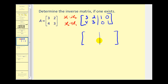Carrying out the operations: for row 1, 3 times 3 minus 2 times 4 is 9 minus 8, that's 1. Then 3 times 2 minus 2 times 3 is 6 minus 6, that's 0. Then 3 times 1 minus 2 times 0 is 3, and 3 times 0 minus 2 times 1 is negative 2. For row 2, 3 times 4 minus 4 times 3 is 0. Then 3 times 3 minus 4 times 2 is 9 minus 8, that's 1. Then 3 times 0 minus 4 times 1 is negative 4, and 3 times 1 minus 4 times 0 is 3.